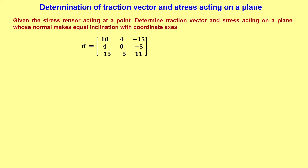Given the stress tensor acting at a point, we are asked to find out what is the traction vector, because without knowing the traction vector it is difficult to find the stress acting on a plane. So, first we find the traction vector and then the stress acting on a plane whose normal makes equal inclination with the coordinate axis.